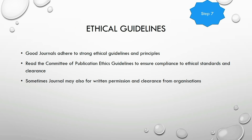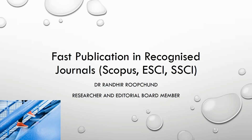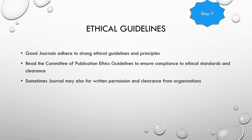Another important aspect is ethical guidelines. Many journals now adhere to the Committee on Publication Ethics (COPE) guidelines to ensure compliance with ethical standards. For example, you need permission from a company before naming them, and clear consent depending on the topic. Always check whether you have adhered to COPE guidelines, as journals are becoming increasingly stringent on this aspect.